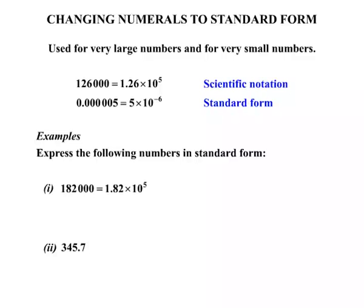This next one, 345.7. Well we can see our point at this stage and we need to move it after that 3. So we're going to move it to its new position there. So again let's count how many places we moved: 1, 2. Okay, a little bit easier, just 2 places. So we write down that number then with its new position for the point: 3.457 times 10 to the power of 2, because we move the point 2 places.